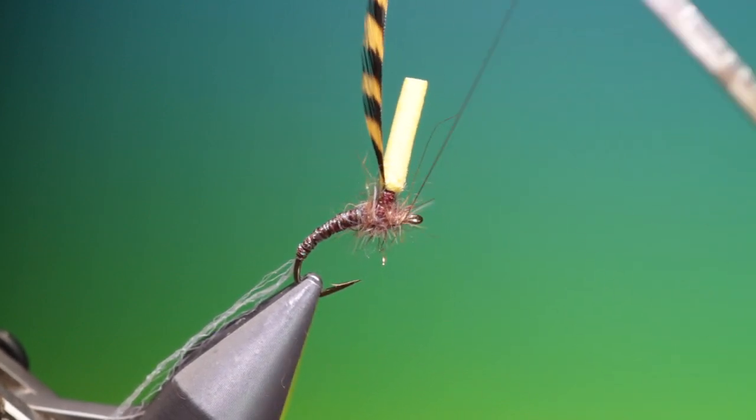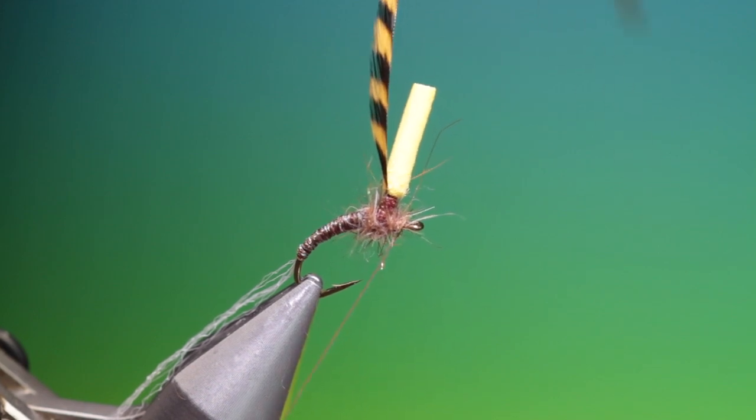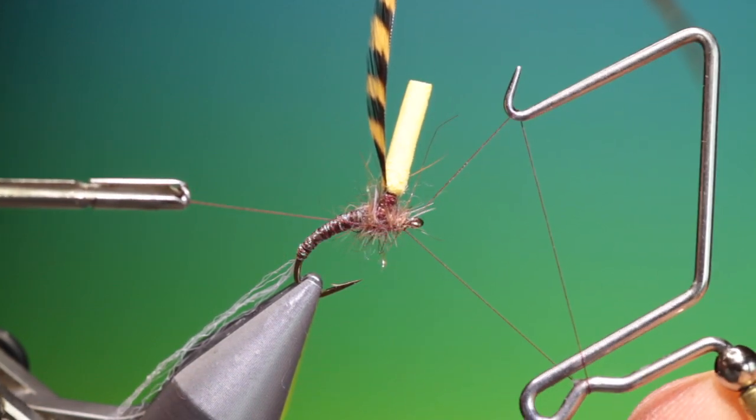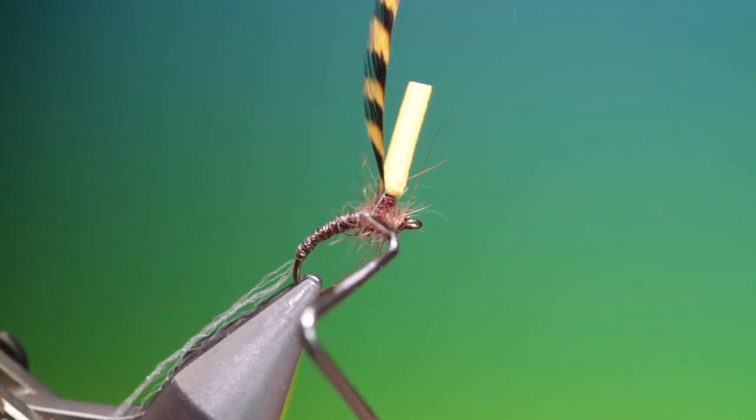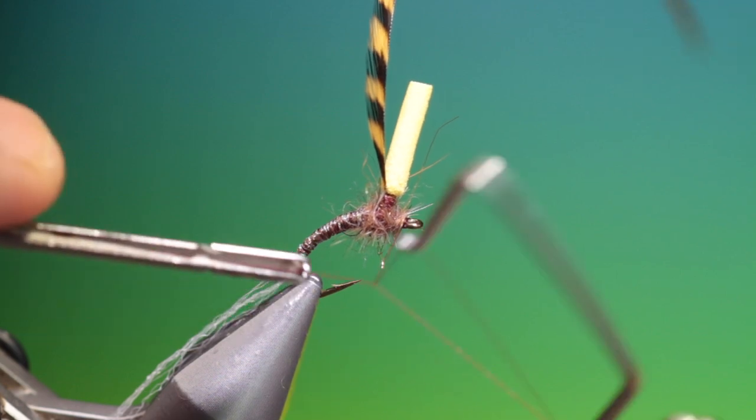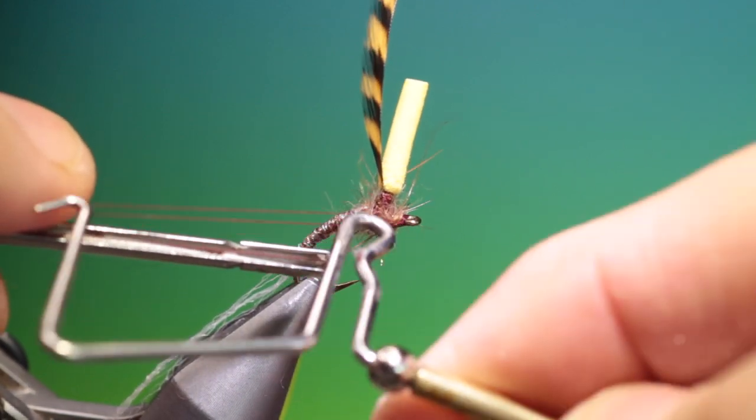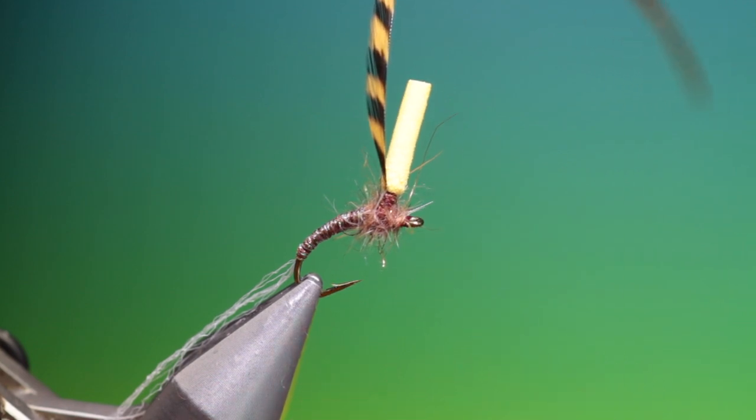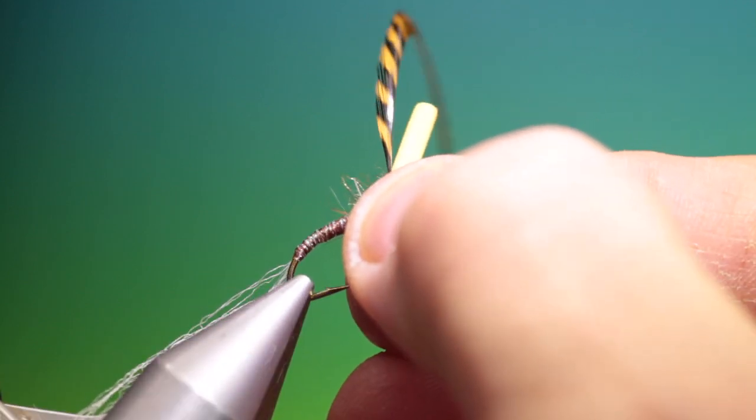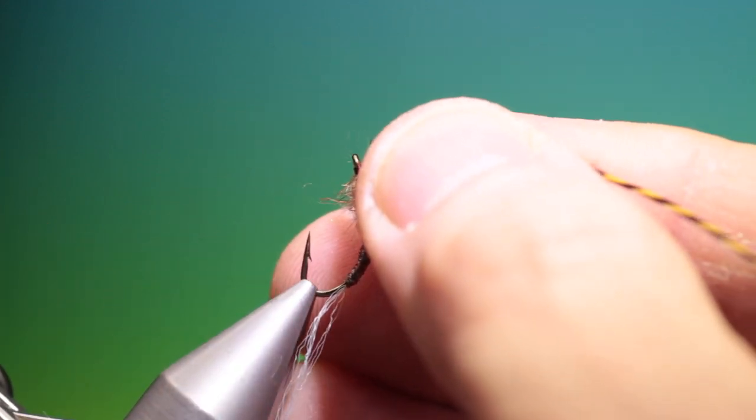Forward to the hook eye. Whip finisher. Couple of whip finishes. And we'll remove that. Turn this around.